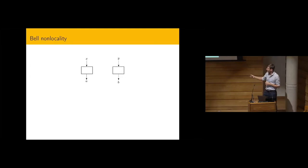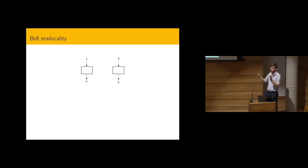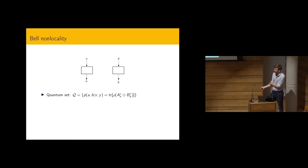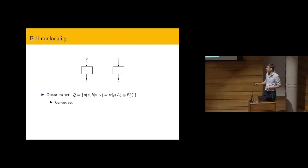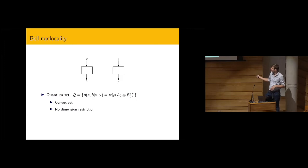Each party receives inputs from some classical set, presses a button on their box, and gets a classical outcome from a finite alphabet. They are not allowed to communicate during the experiment, but they may share correlations — for example, quantum correlations in the form of a bipartite quantum state. This defines the quantum set of correlations: the probabilities of outcomes A and B given settings X and Y, which is a convex set with no dimension restriction.